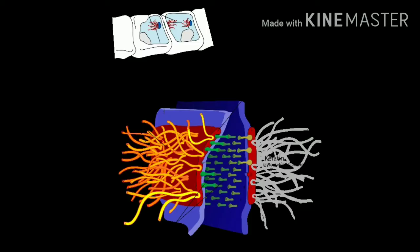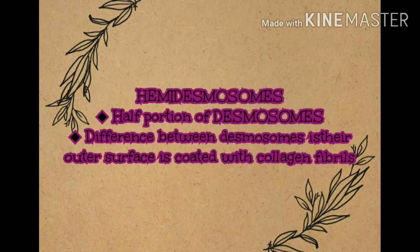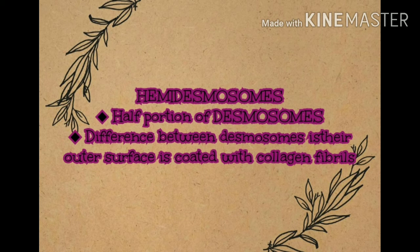The fifth modification is hemidesmosomes, which are the half portions of desmosomes seen at the basal surface of certain epithelial cells. They resemble desmosomes, but the only difference is that they are not coated with collagen fibers on the outside. 'Hemi' means half, so hemidesmosomes are essentially half of desmosomes, as seen in the picture.